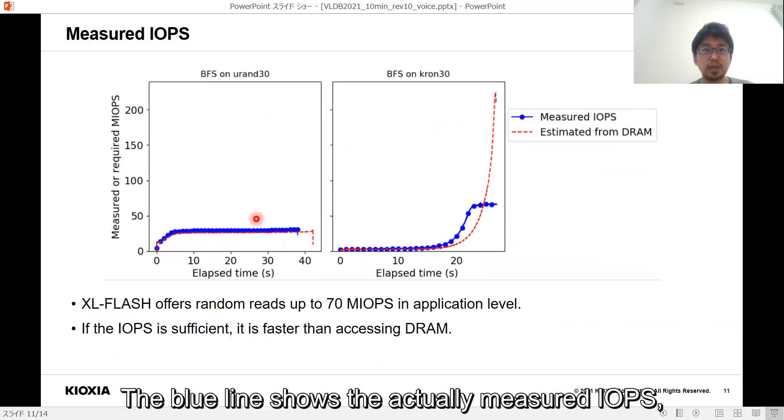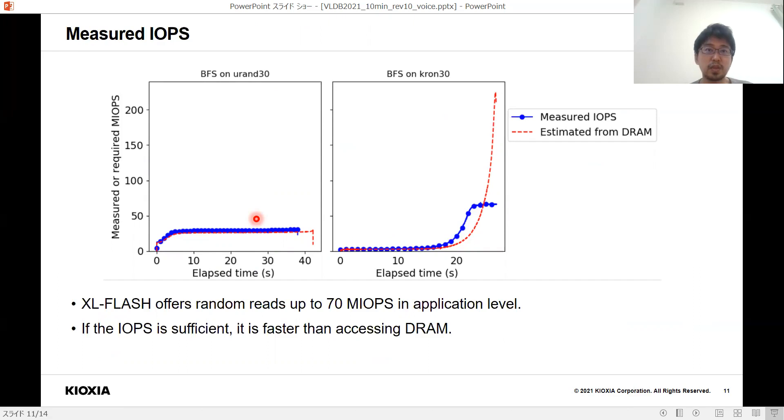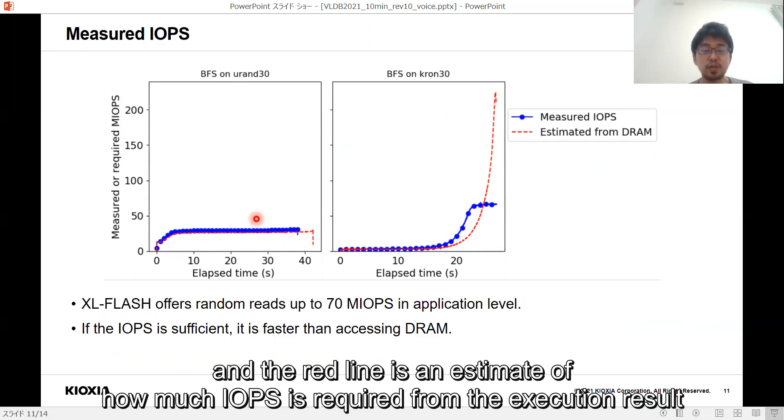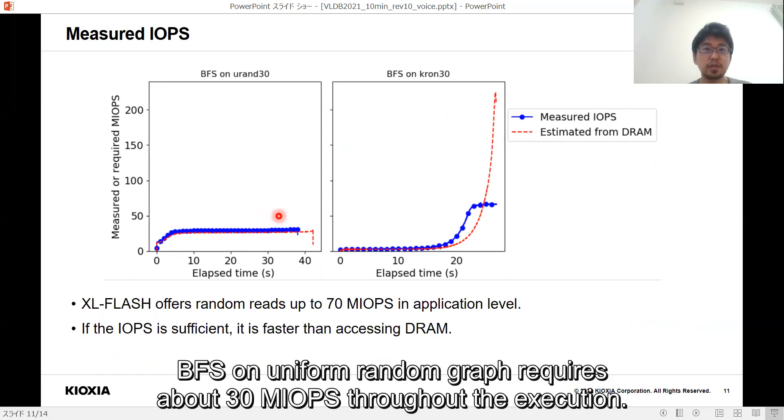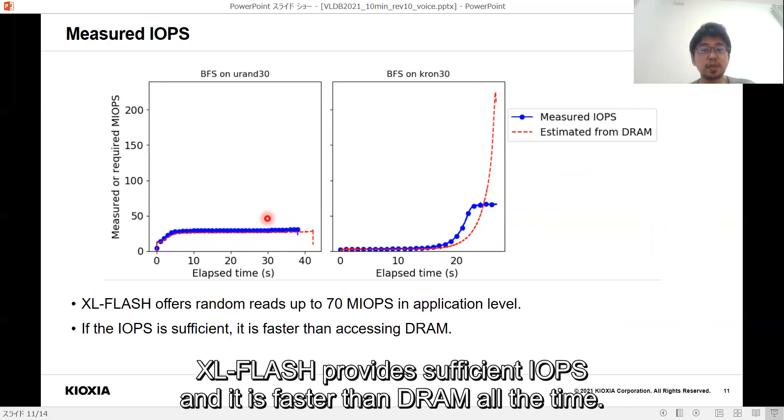The blue line shows the actually measured IOPS, and the red line is an estimate of how much IOPS is required from the execution result when all data are placed on DRAM. BFS on Uniform Random Graph requires about 30 million IOPS throughout the execution. XL-FLASH provides sufficient IOPS, and it is faster than DRAM all the time.